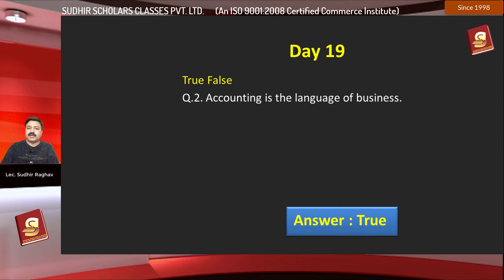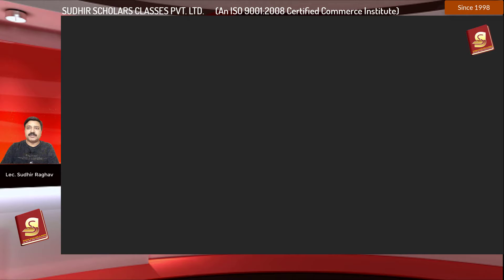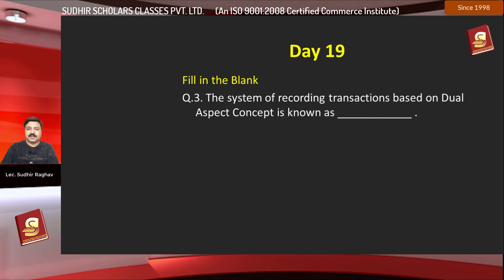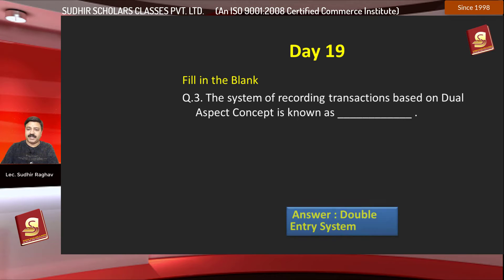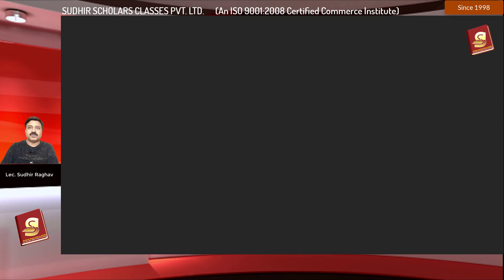Now we start question number three, which is a fill in the blanks question. The system of recording transactions based on the dual aspect concept is known as dash. The right answer is the double entry system.